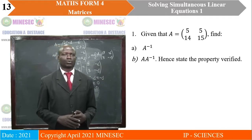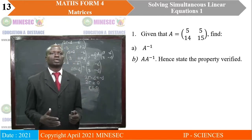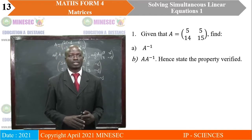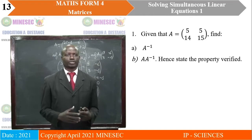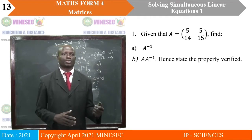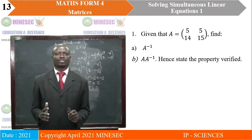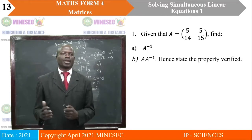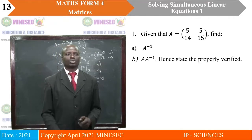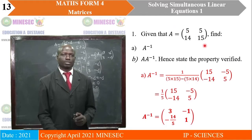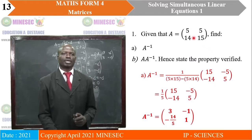Let's verify the prerequisite with these questions. The first question is to find the inverse of A, where A equals [5, 5; 14, 15]. Secondly, we will find the product A times A inverse and state the property verified by that. The inverse of a matrix is calculated as 1 divided by the determinant times the adjoint. So the inverse of A will be 1 divided by its determinant, which is 5 times 15 minus 5 times 14, into the adjoint.